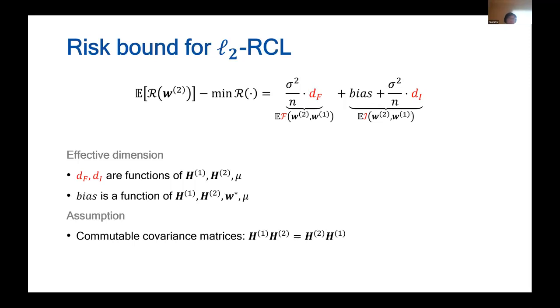These two effective dimensions are functions of the two covariance matrices determined by the two tasks, H1 and H2, or the similarity between them, and also the regularization parameter mu. Furthermore, the bias is also a function of these two covariance matrices, mu, and the optimal parameter.